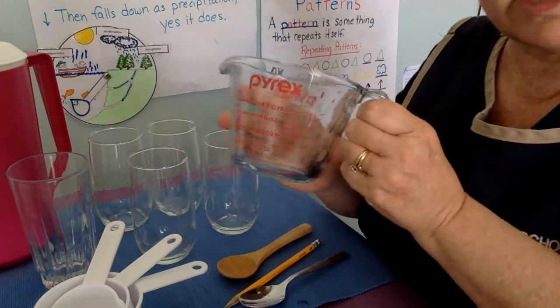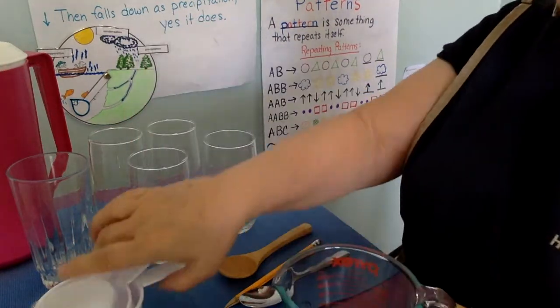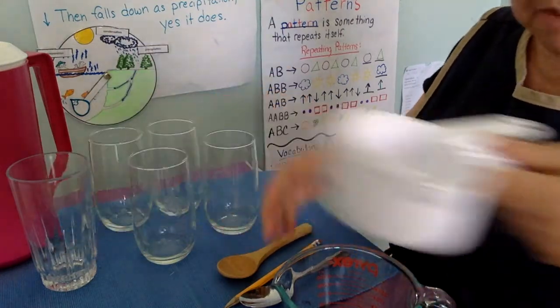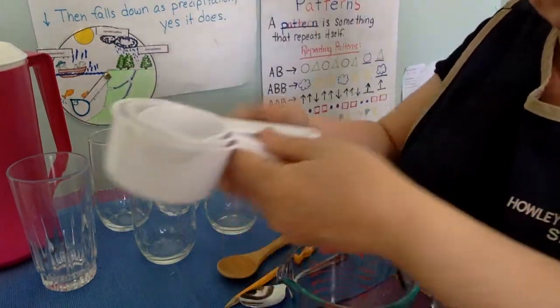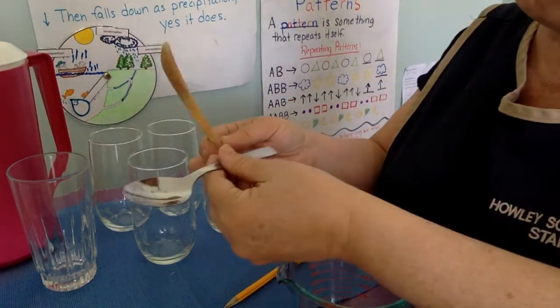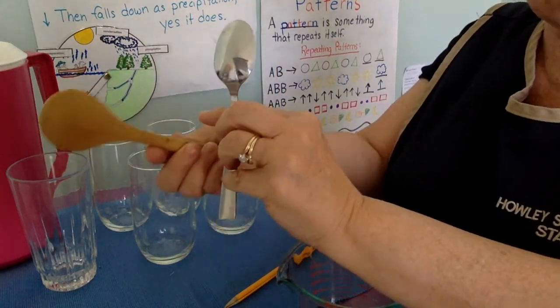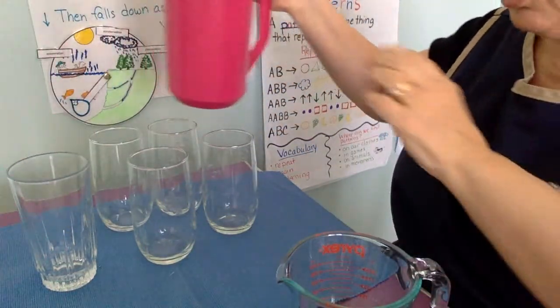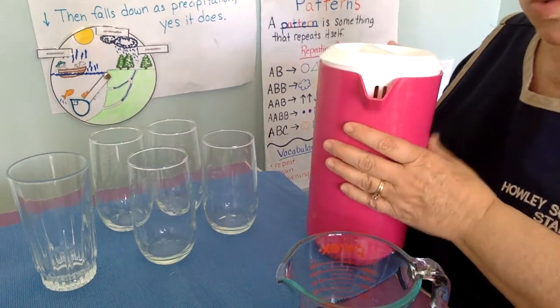A measuring cup or you can use these measuring cups. I'm going to use the glass one. You can also use these. I also have here a spoon, a metal spoon, a wooden spoon, and a pencil. And then in this jug here I have water.